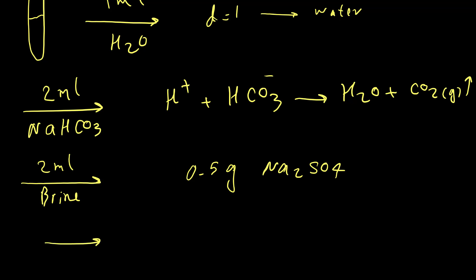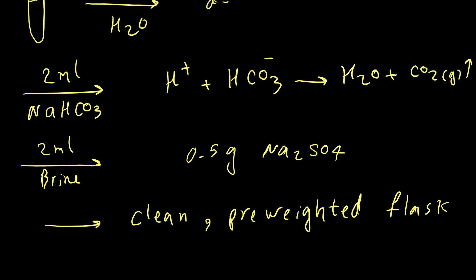After adding 0.5 grams of sodium sulfate, give it time for 5 minutes. Then we are going to slowly remove our product and transfer it to a clean and purified flask. Then we can calculate the mass of the product.